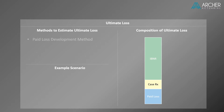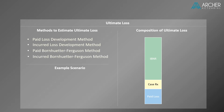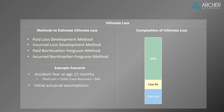I'll describe the paid and incurred loss development methods and the paid and incurred BF methods. Instead of looking at these methods from a theoretical viewpoint, we'll utilize a simple example for an accident year evaluated at age 12 months. In this example, we have paid loss equal to $100 and case reserves equal to $60. We'll also start with two actuarial assumptions: the paid and incurred age-to-ultimate factors at age 12 months and the initial expected ultimate loss for the BF methods.